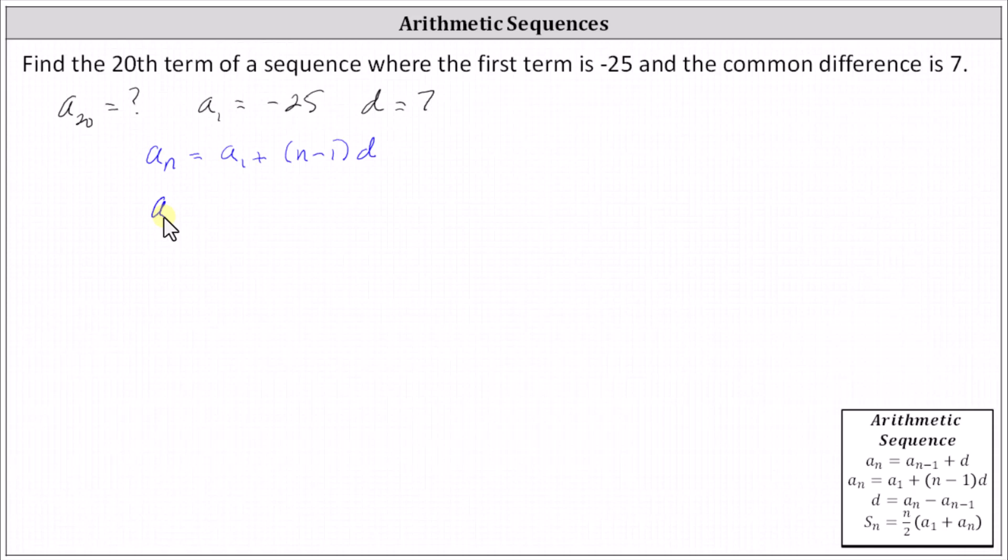This indicates that a sub n equals negative 25 plus the quantity n minus 1 times 7. This is the formula for a sub n, but let's simplify by distributing 7 and then combining like terms.